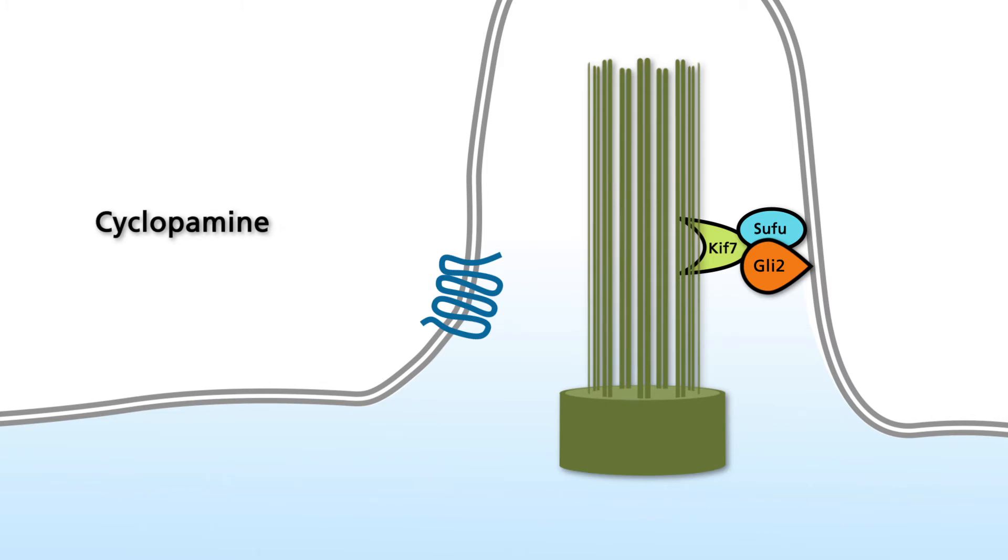The antagonistic effect of cyclopamine is based on direct binding to smoothened. As a consequence, signaling is blocked.